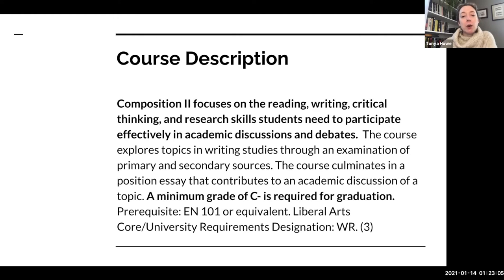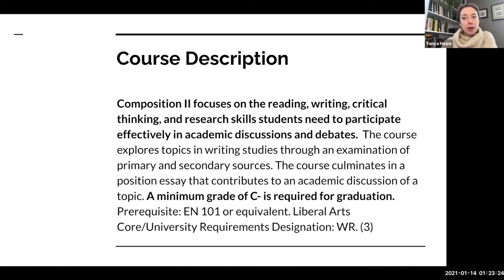We're also going to work with the kind of reading, writing, critical thinking, and research you'll need to engage with primary literary texts, historical texts, and so on. The course will culminate in a position essay that contributes to an academic discussion of a topic. We'll be using our primary source material for the term. You need a C minus to pass EN 101 and EN 102 as part of Marymount's university writing requirements.